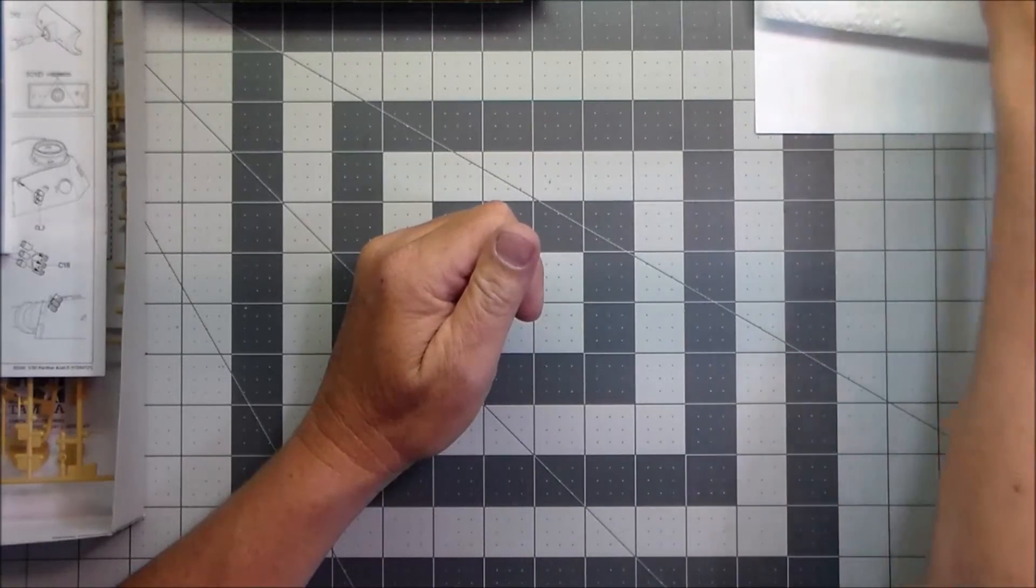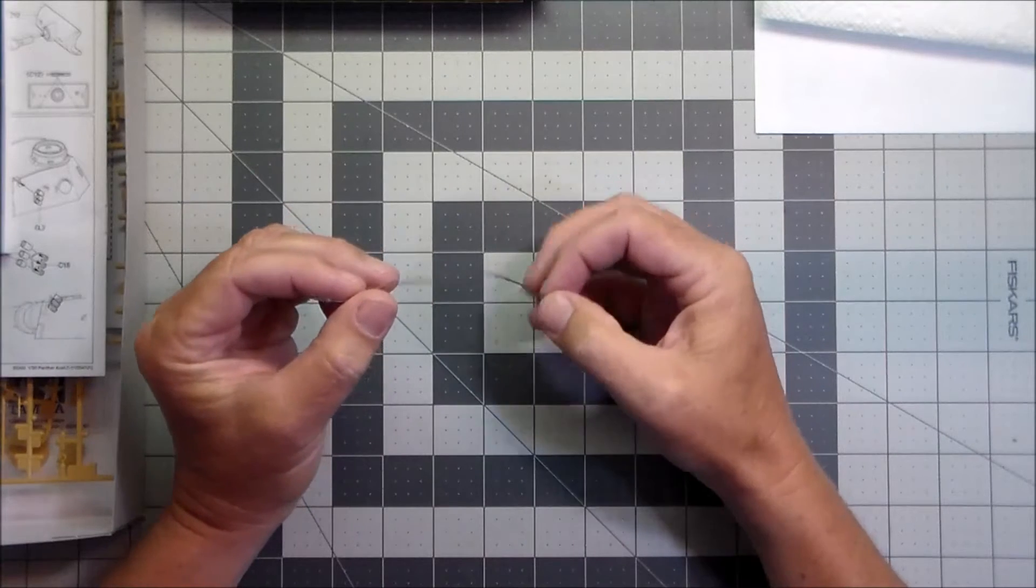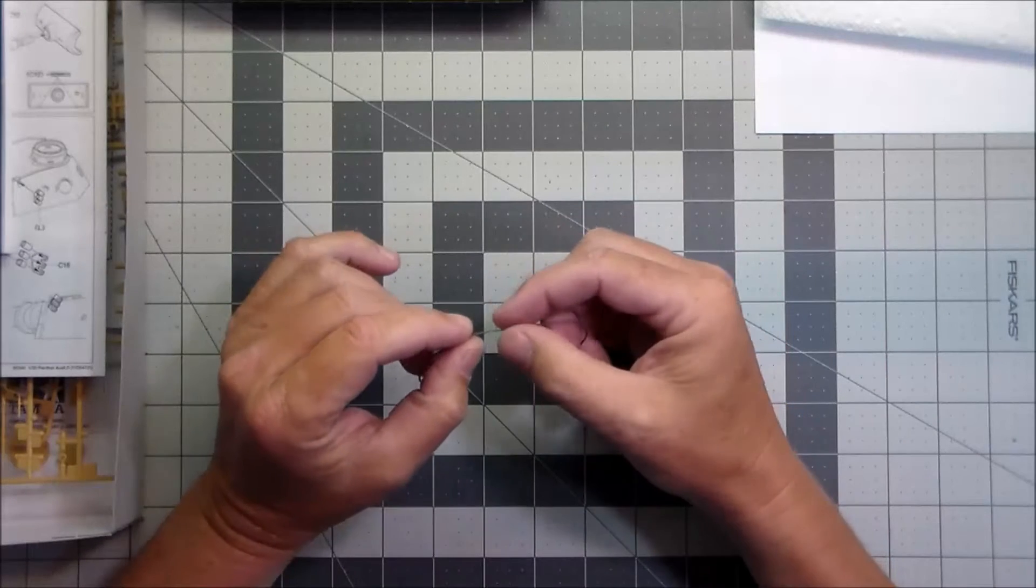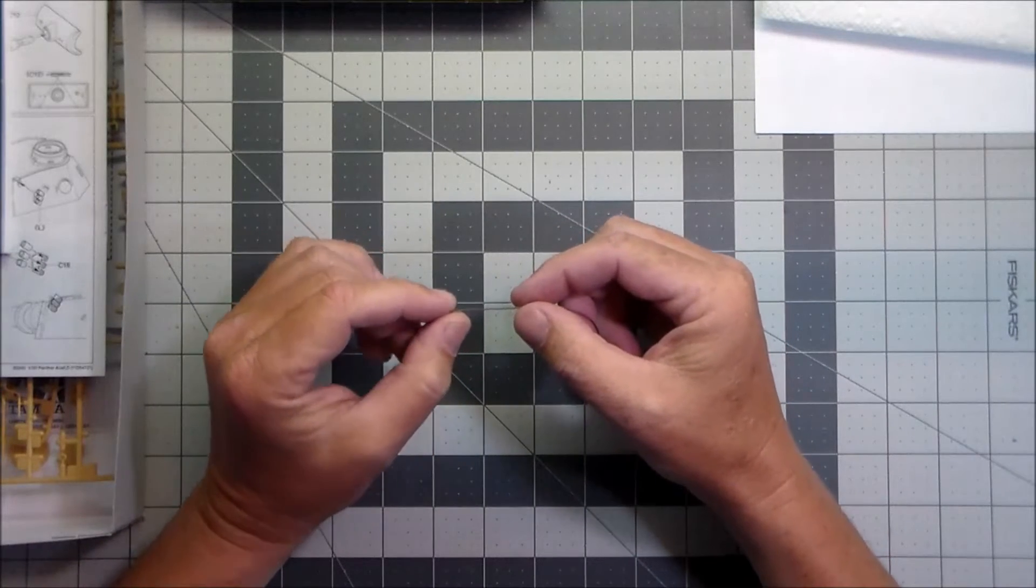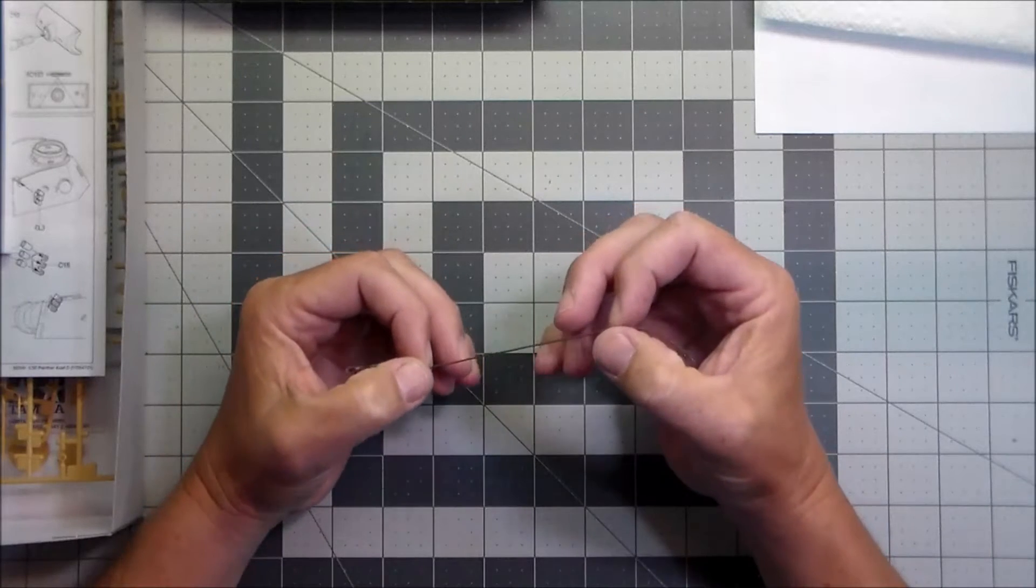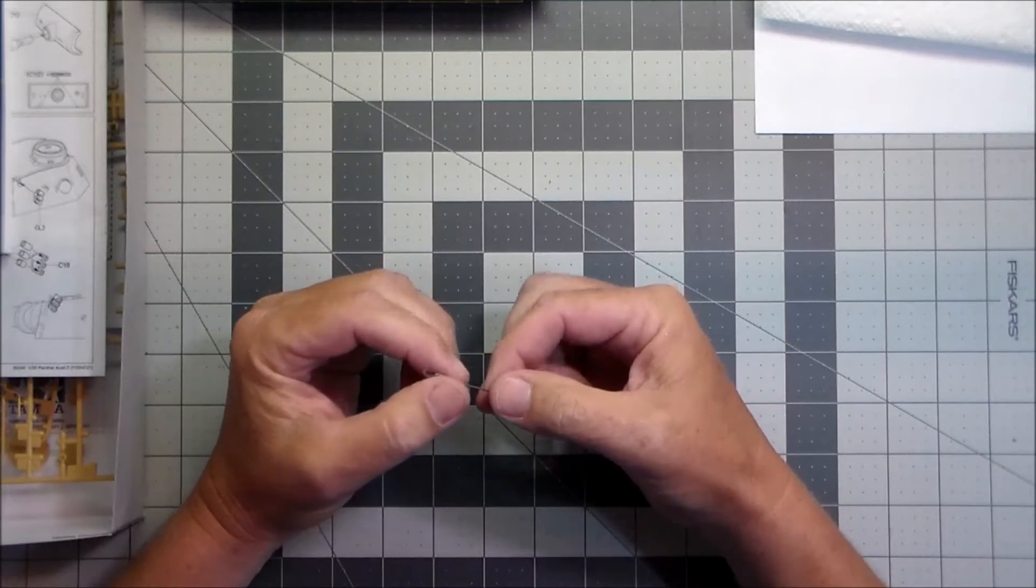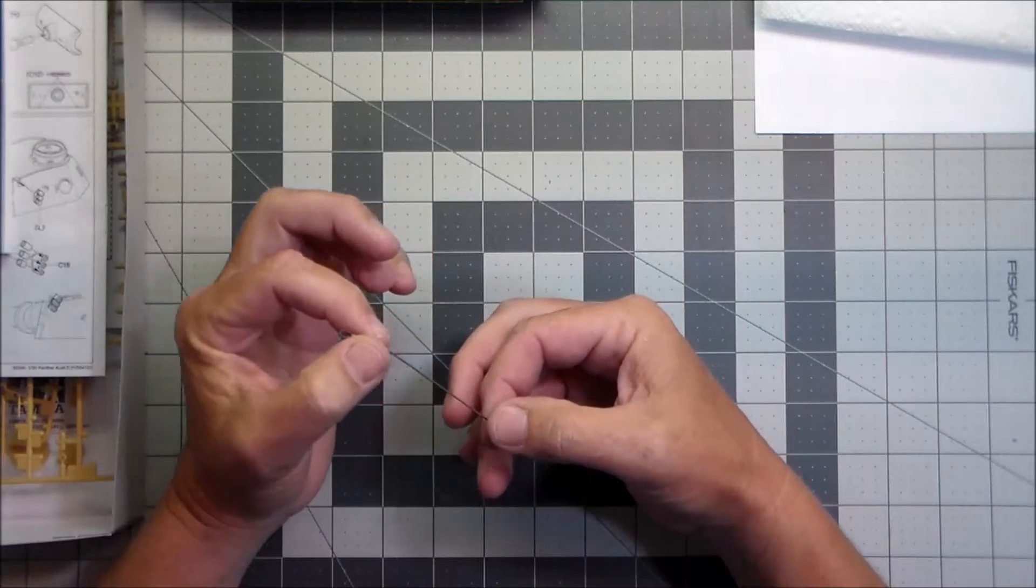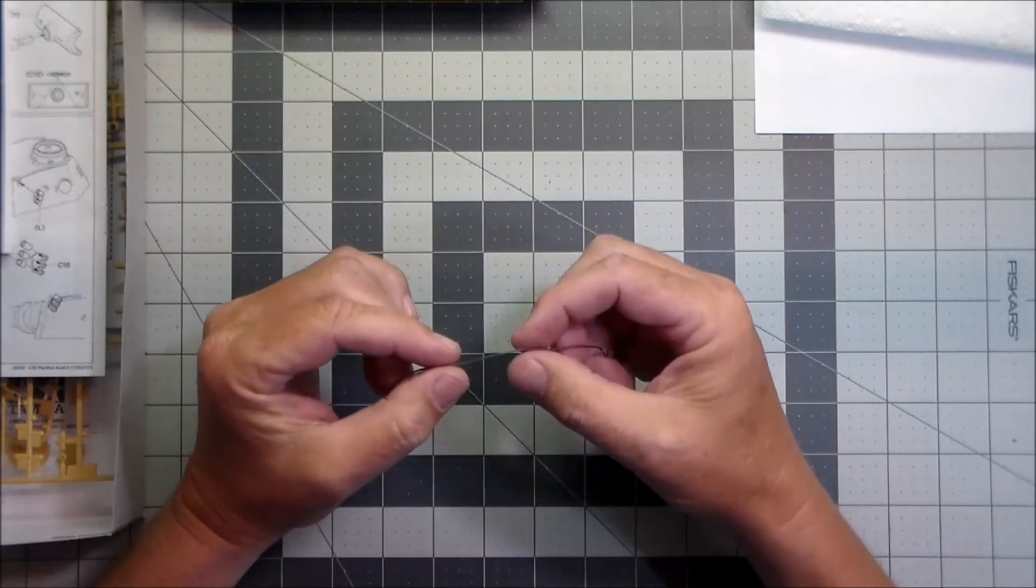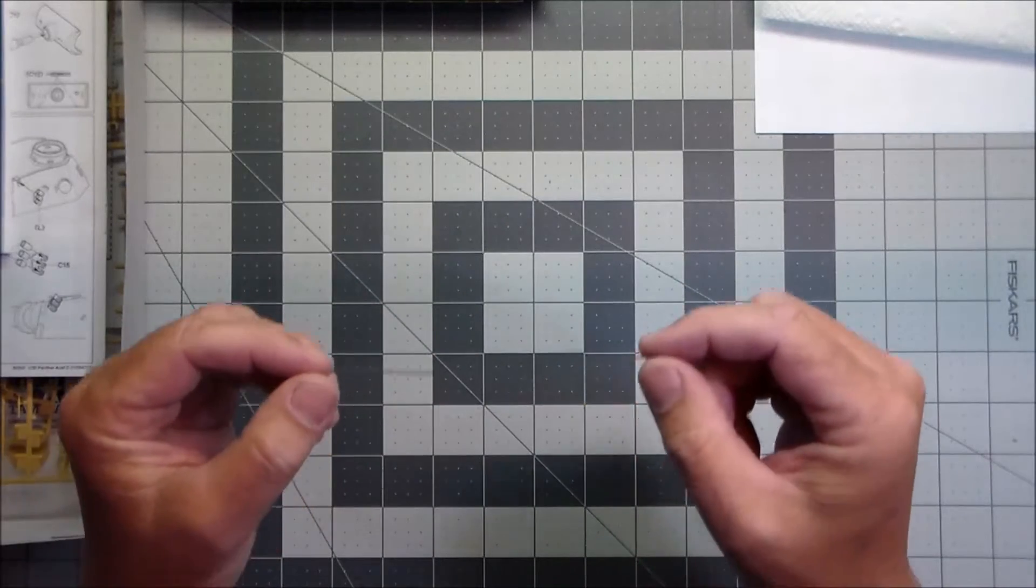So what he did is he sent me these awesome tow cables. Now, these are made out of heavy thread. I used something similar to this, but it was much larger on my Tiger Tank, the 1/25th scale Tiger Tank. And obviously that thread was too big, but it's something like this. It's really smooth. It doesn't have any fraying to it. I'm not sure what kind of string this is, but it's really nice.